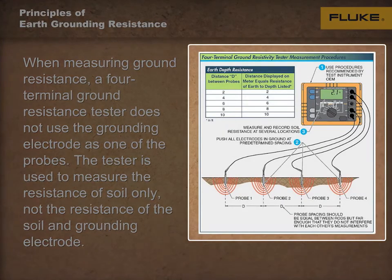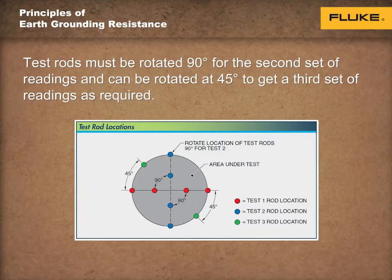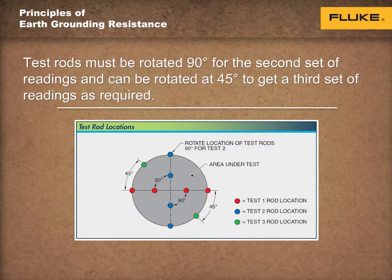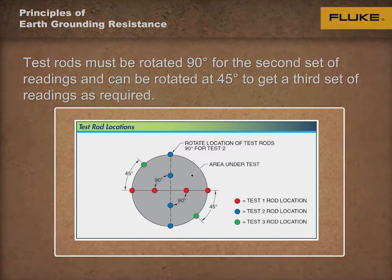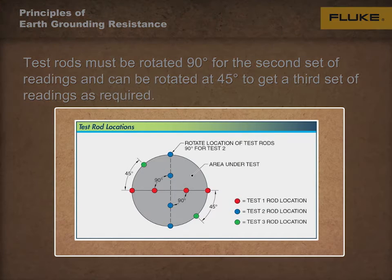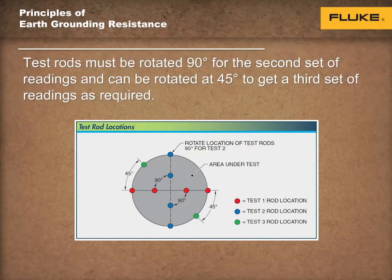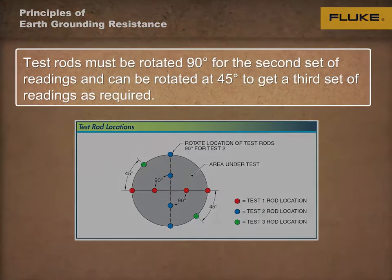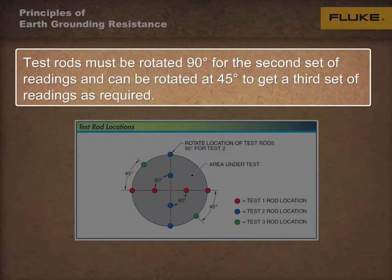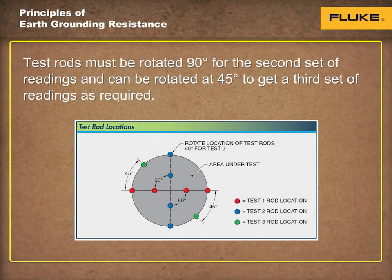This is only if your device does not have memory for storing and retrieving test results. As seen on the screen, test rods can be rotated 90 degrees to get a more accurate indication of the entire soil condition. If the test results vary widely, additional measurements can be taken at 45 degrees to give a clearer picture of the soil conditions.